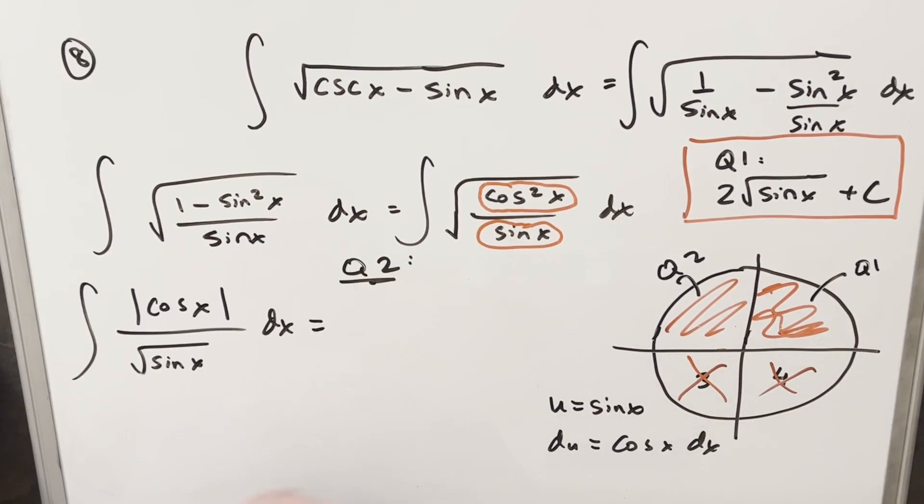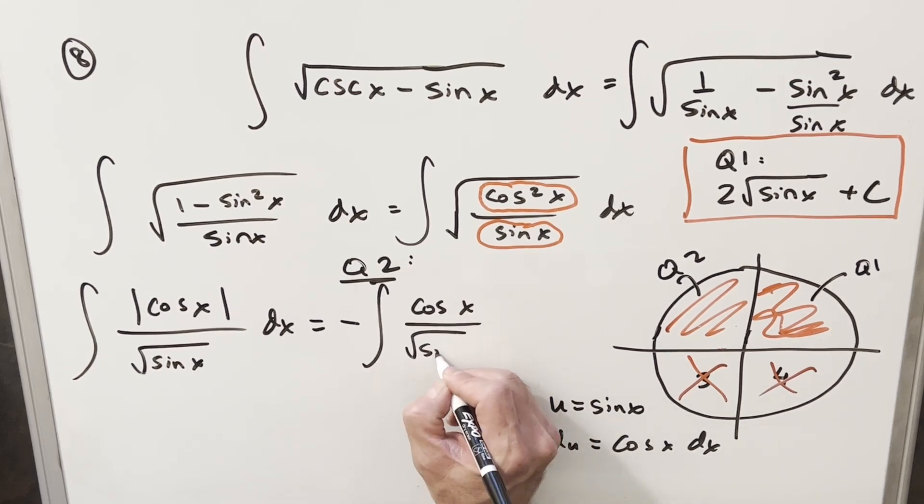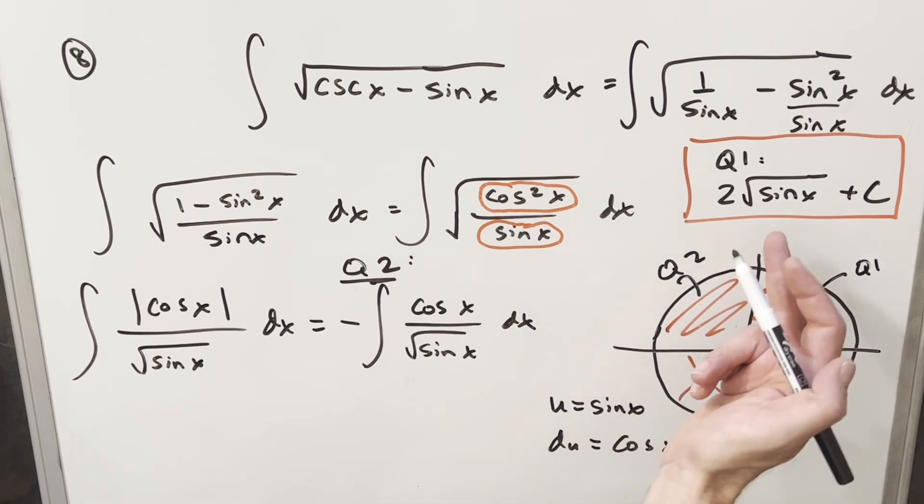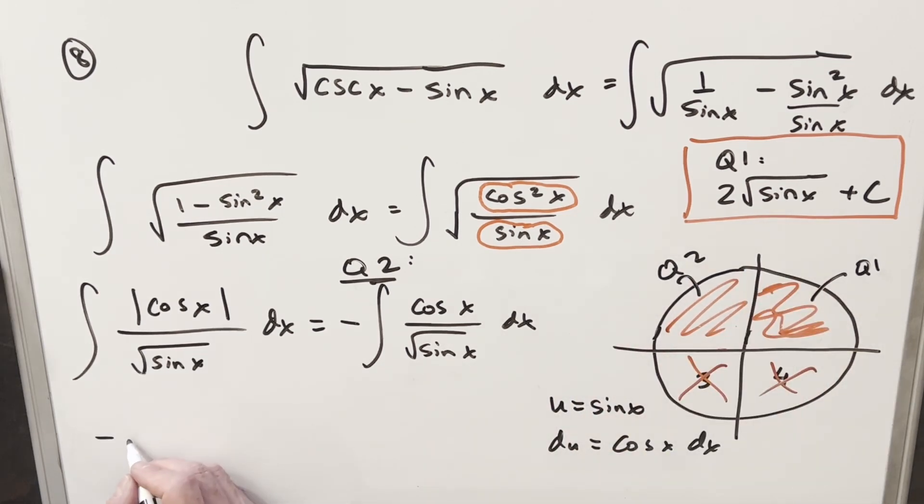Okay, now for quadrant two, really similar. Cosine of x, cosine has to be negative in this region. So to drop our absolute value, what I need to do is I need to bring a minus sign up front, or I could put the minus in the cosine, I'm just going to bring it up front of the integral. And then we're going to have just the same exact integral we just did in quadrant one. So we do the same u substitution, we do the same steps, we're going to get that, but with a minus in front. So what we're going to get in quadrant two is we're going to get a minus two square root of sine x plus c.